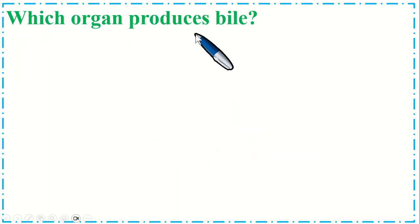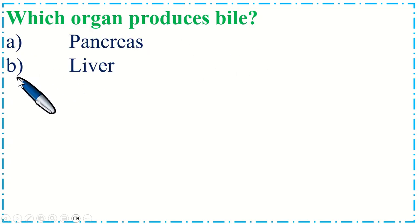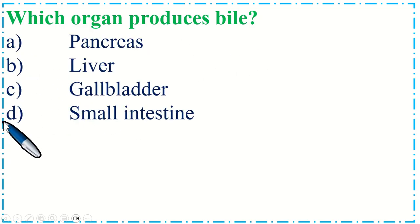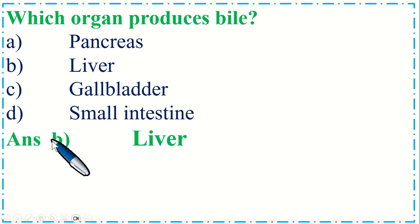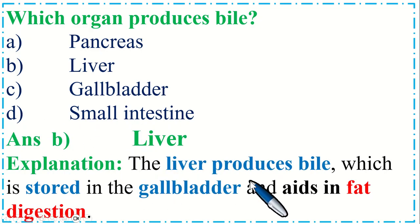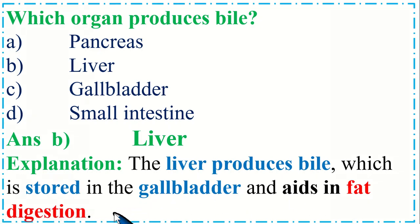Which organ produces bile? Option A: Pancreas, B: Liver, C: Gallbladder, and Option D: Small intestine. The correct option is B, Liver. The liver produces bile, which is stored in the gallbladder and aids in fat digestion.